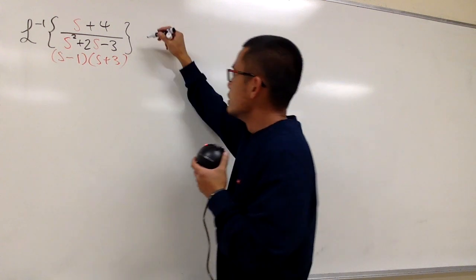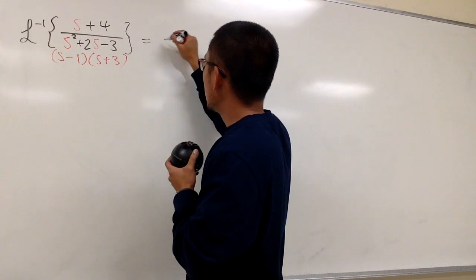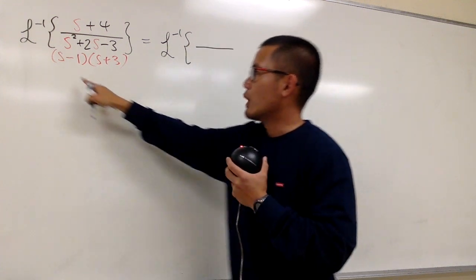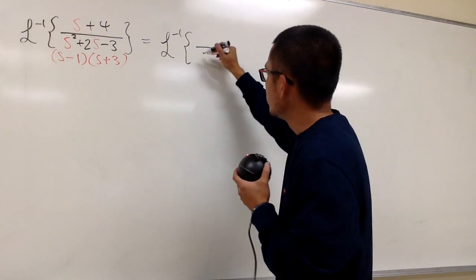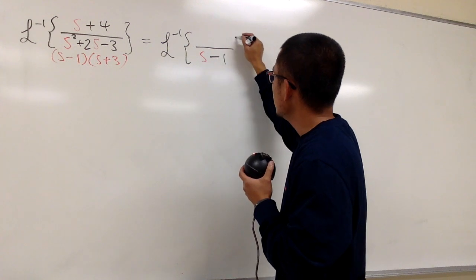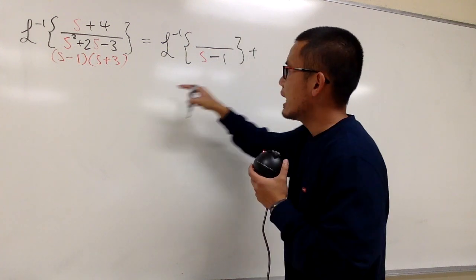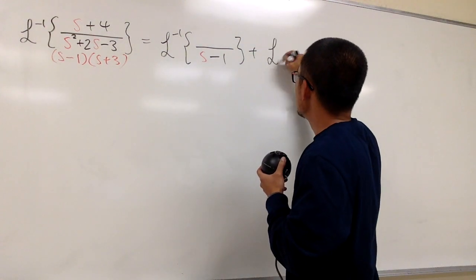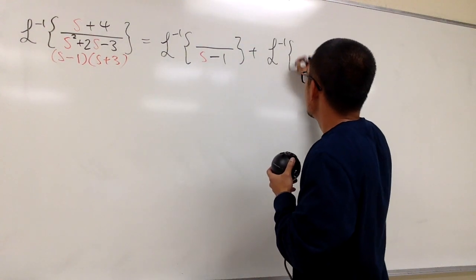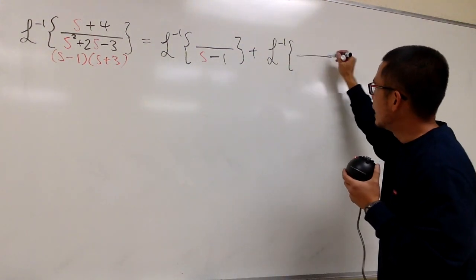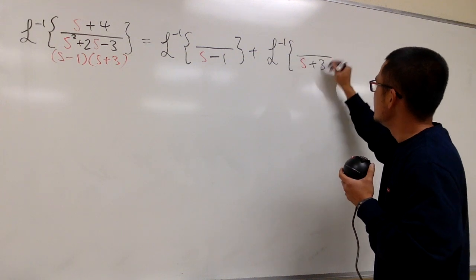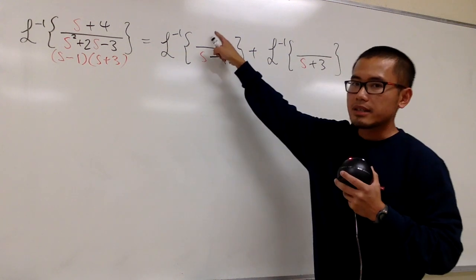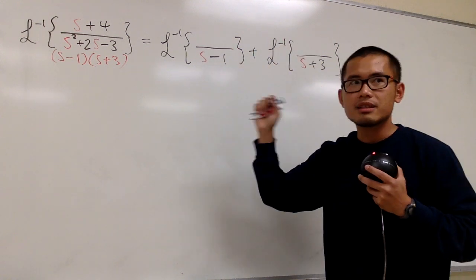Let's put down the inverse Laplace. For the first fraction, we will have s minus 1 in the denominator. Then we add it with the inverse Laplace of the second fraction, which has s plus 3 in the denominator. Since both of these are linear, that means on top we must have constants.